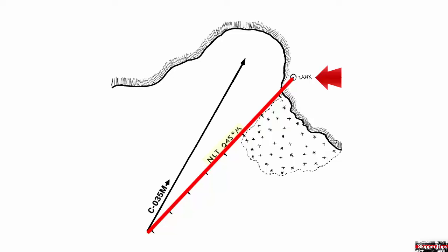Here you can see we've drawn our line off the outermost edge of the shoal, and that's very important. Plot and label the danger bearing. Here we found the danger bearing to be 045 degrees magnetic.